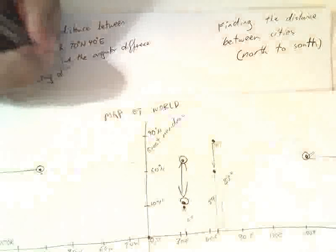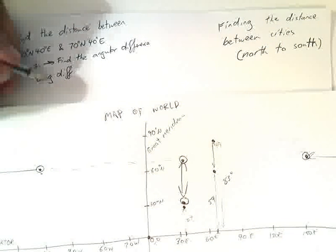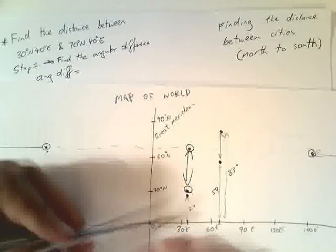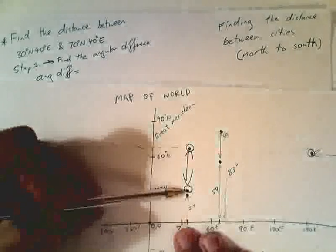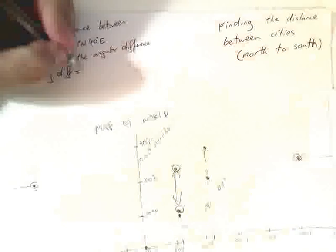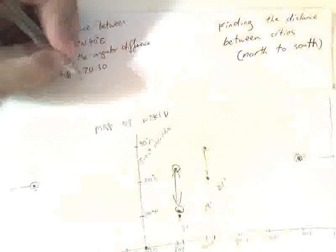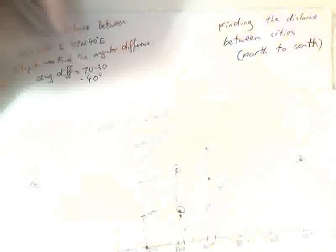You can just write it as angular difference, abbreviated A-N-G-D-I-F-F. In this case it equals 70, this length, minus this length, 30. So 70 minus 30, the angular difference is 40 degrees.